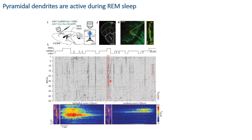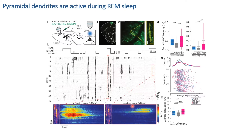Some events spread across the entire dendrite — we define these as spreading events — while others stay very localized, close to a spine, defined as confined events. Strikingly, unlike the somatic compartment, the dendrites not only maintained their activity during REM sleep but their activity was even significantly enhanced. This was particularly true for spreading events. We calculated the average propagation of all detected events and found that events propagate more during REM sleep compared to wake and non-REM.